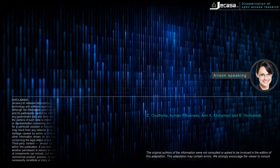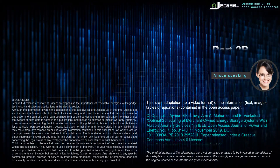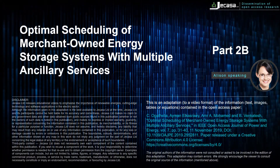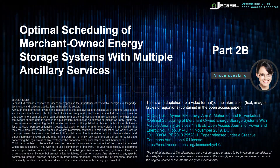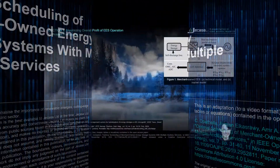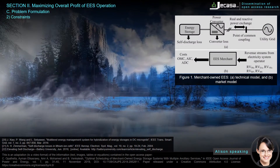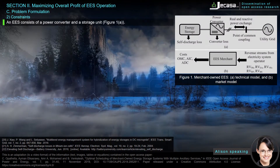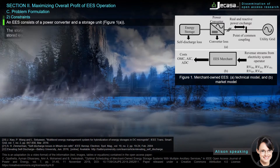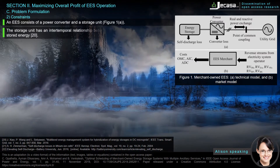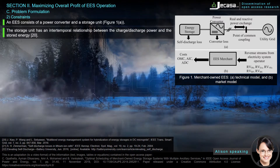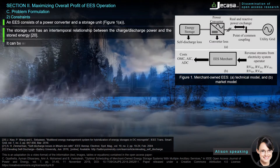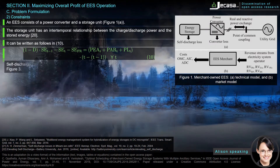This is an adaptation of the open access paper: Optimal Scheduling of Merchant-Owned Energy Storage Systems with Multiple Ancillary Services. The EES consists of a power converter and a storage unit. The storage unit has an intertemporal relationship between the charge/discharge power and the stored energy.